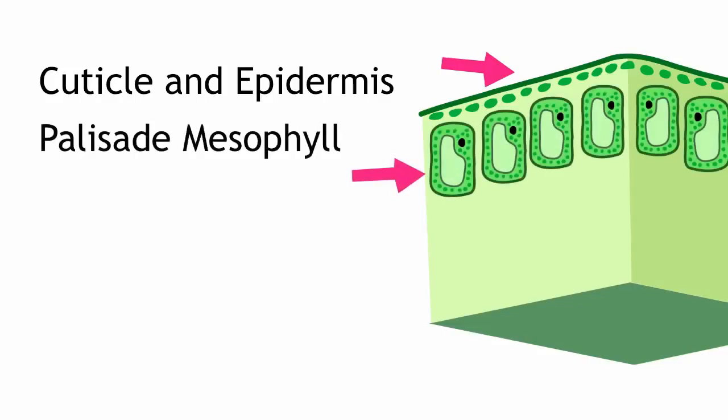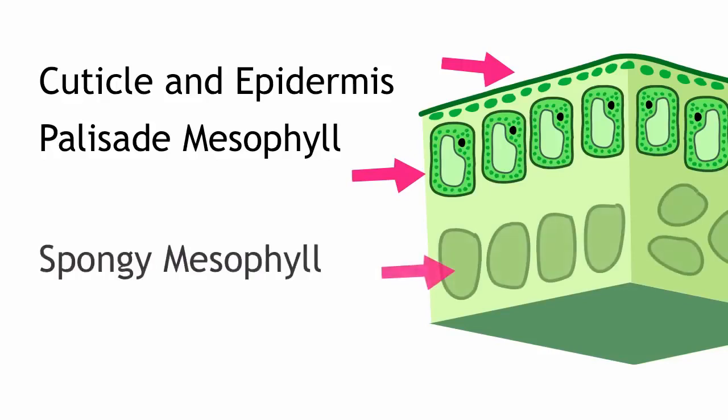Then comes the chlorophyll-rich palisade mesophyll, where the bulk of photosynthesis occurs. Below that's the spongy mesophyll, which have plenty of space in between them for reactants to move through.